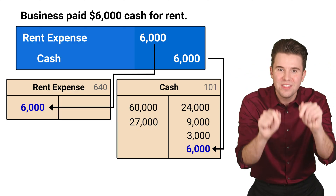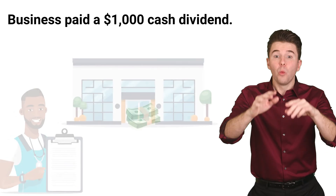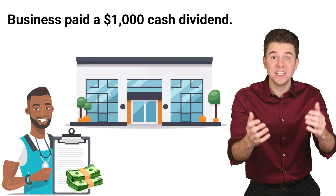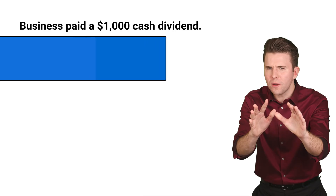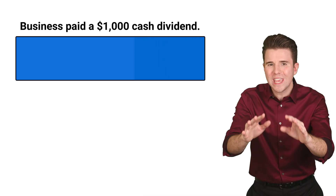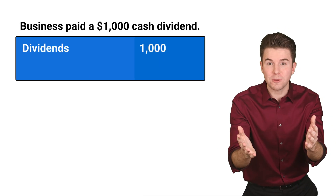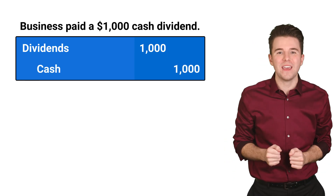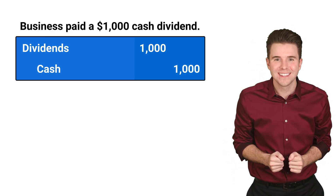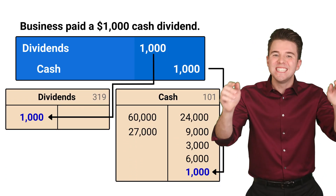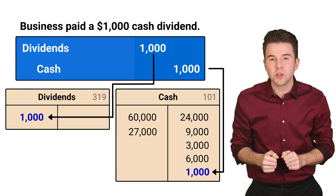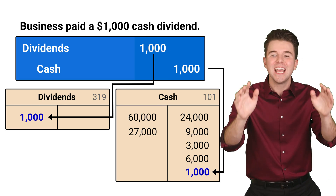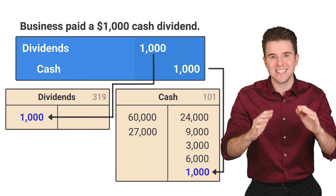Next, we distribute a $1,000 cash dividend. To record this, we debit dividends for $1,000 and credit cash for $1,000. The debit to dividends decreases total equity and the credit to cash decreases total assets.